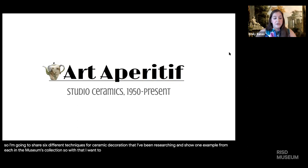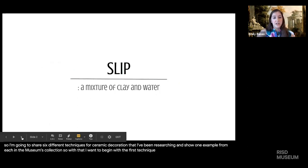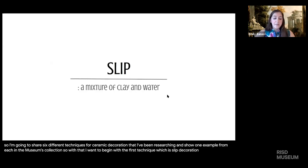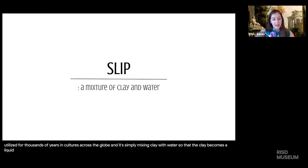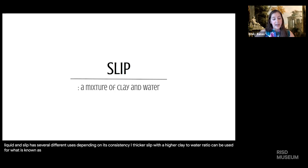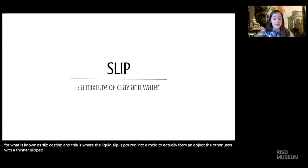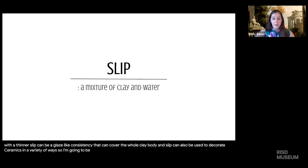The first technique is slip decoration. Slip has been utilized for thousands of years in cultures across the globe. It's simply mixing clay with water so that the clay becomes a liquid. Slip has several different uses depending on its consistency. A thicker slip with a higher clay-to-water ratio can be used for slip casting, where the liquid slip is poured into a mold to form an object. A thinner slip can have a glaze-like consistency that covers the whole clay body, and slip can also be used to decorate ceramics in a variety of ways.